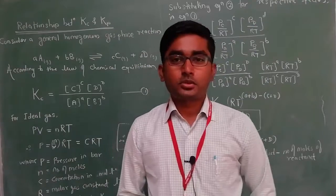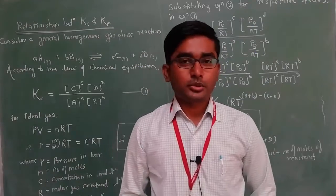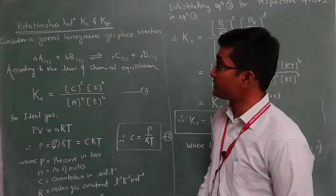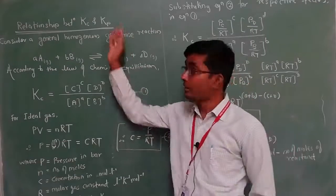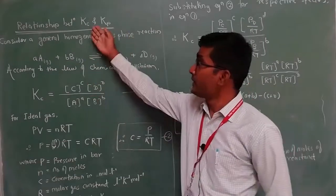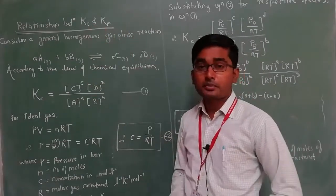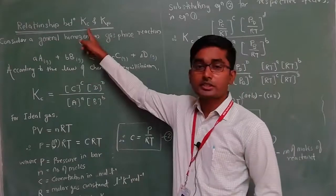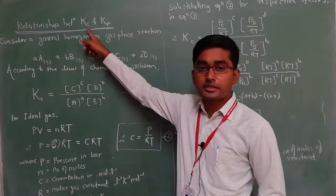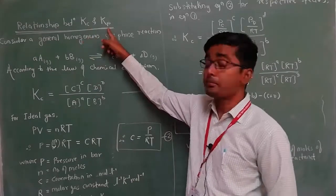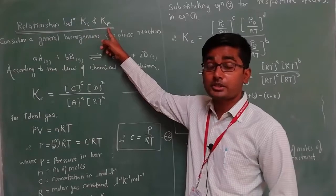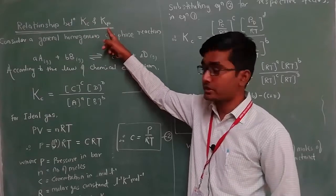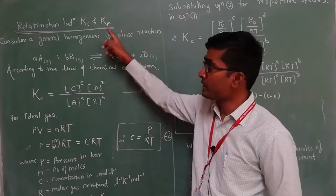Namaste friends, welcome to today's session. Today we are going to discuss the relationship between Kp and Kc. Kc stands for the equilibrium constant when the concentration terms are expressed in moles per liter, and Kp stands for the equilibrium constant when the concentration terms are expressed in pressure units.